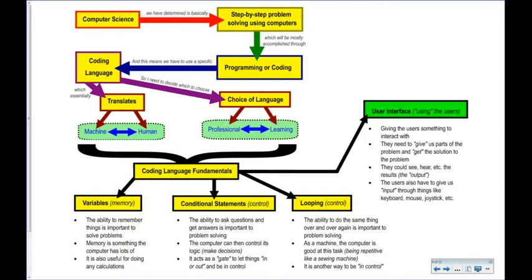Building on that, we're going to do a whole unit called looping, which takes that thought process to the next level where it still makes decisions and is still in control, but it can do the same thing over and over again. As a machine, it's really good at this — like most machines, it can do the same thing over and over again and still be in control.